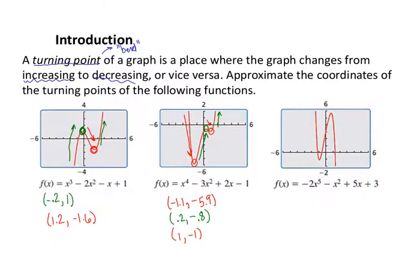Our last example is a fifth-degree polynomial. The function begins by decreasing, then has a turning point at about negative 1, negative 1. After that it increases until about 0.8 and 5.6, then decreases the rest of the way with no more bends. It's tempting to think a fifth-degree should have four turning points, but no — it's at most four. The fact that it only has two is just fine. At most it could have had four, but it could have fewer.